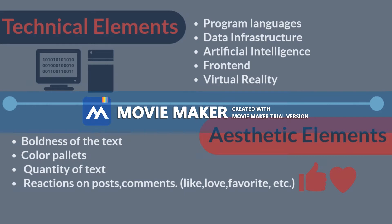Now let's talk about the technical and aesthetic elements. Technical elements are programming language, data infrastructure, artificial intelligence, front-end, and virtual reality. Aesthetic elements are boldness of the text, color palettes, quantity of the text, reactions on posts and comments — for example likes, loves, favorites, etc.